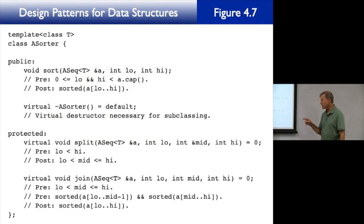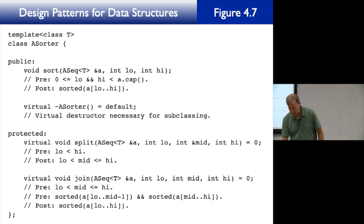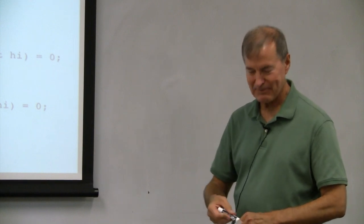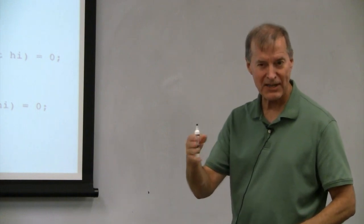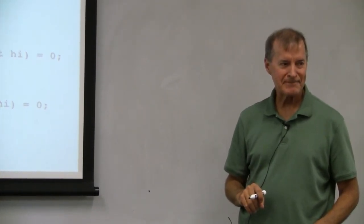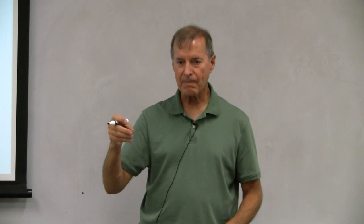What I'd like to focus on now is something we went over rather quickly last time: the preconditions and postconditions. Before we do this, let's see if you guys can remember something from discrete structures. Do you remember the Hoare triple? If the precondition is true and statement S executes, it will terminate and the postcondition is guaranteed to be true. That's the interpretation of the Hoare triple.